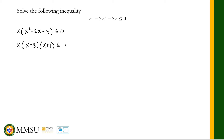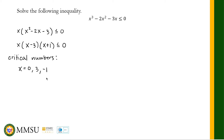There are three critical numbers. We equate all three factors to zero: x equals 0, x minus 3 equals zero gives x equals positive 3, and x plus 1 equals zero gives x equals negative 1. Arranging in increasing order: x equals negative 1, 0, and 3. These three critical numbers divide our real number line into four intervals.